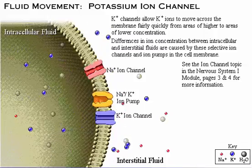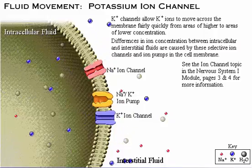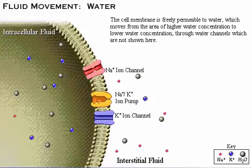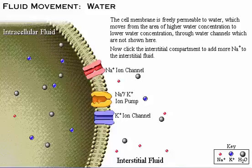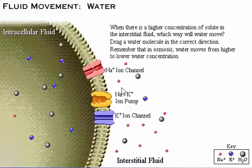These differences make the membrane potential possible and they facilitate a number of important physiological processes. The cell membrane is freely permeable to water, which moves from the area of higher water concentration to lower water concentration. When there is a higher concentration of solute in the interstitial fluid, water will move toward the area of higher solute concentration.